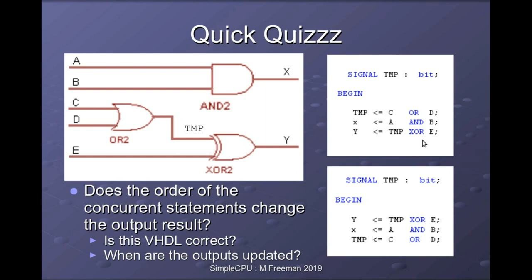This quiz highlights a key difference between software and a hardware description language. In a hardware description language you're modeling logic gates running in parallel, so it does not matter what order you write the concurrent statements. There is no sequential path through concurrent statements — you're describing three things working in parallel, so the order makes no difference.